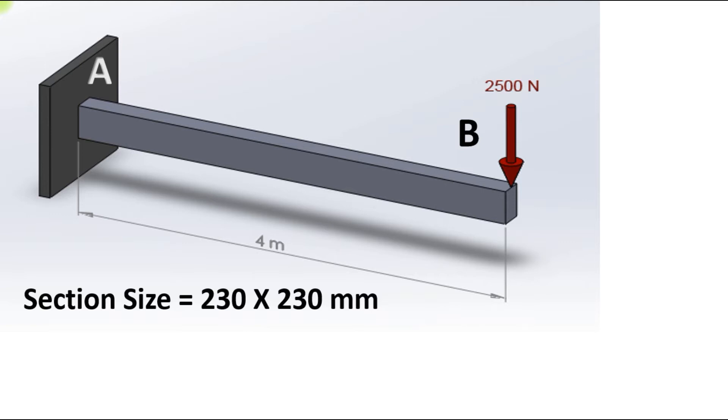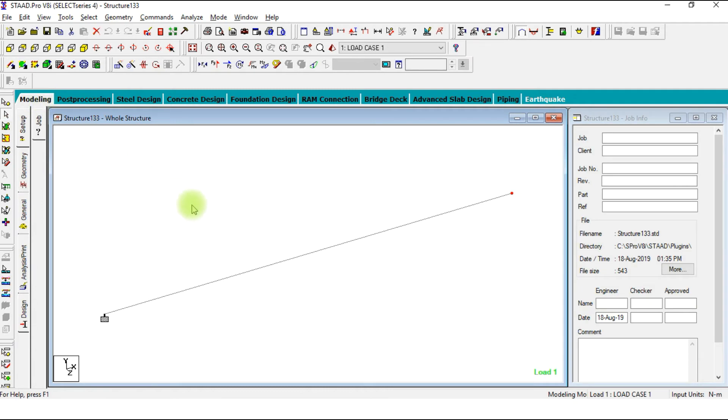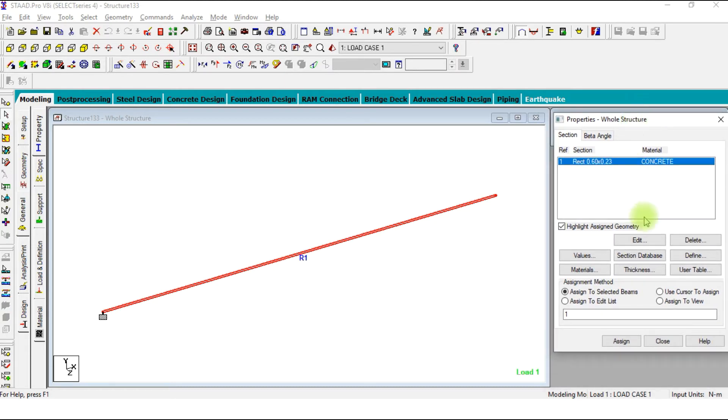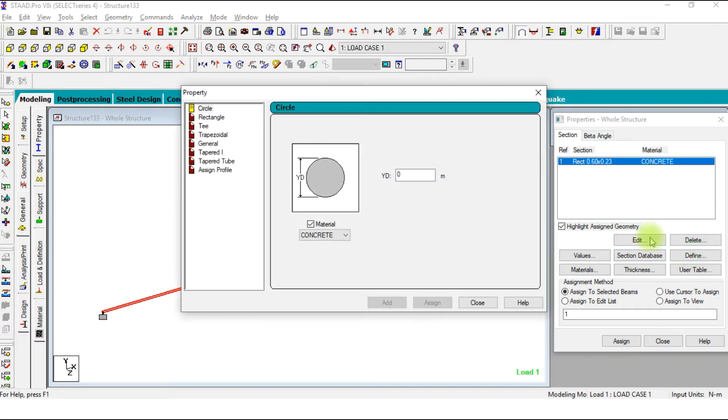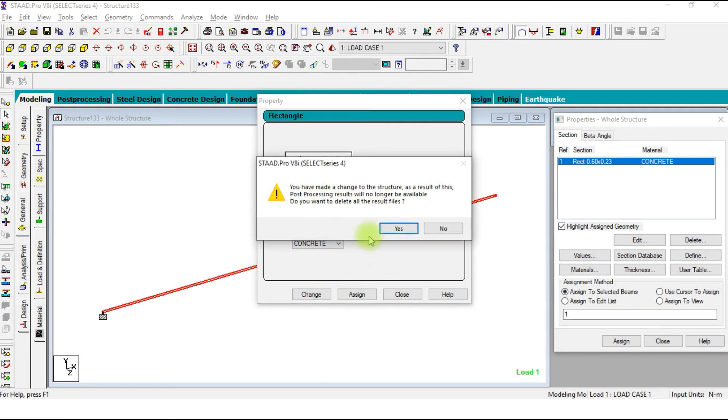Now let's go with the next section of 230 by 230 and check the slope and deflections. Let's change it. For that, go in modeling mode, general, click to the material we have applied previously. Now go for edit, and instead of 0.6 write down 0.23 and change it. Yes, I would like to delete all the results.